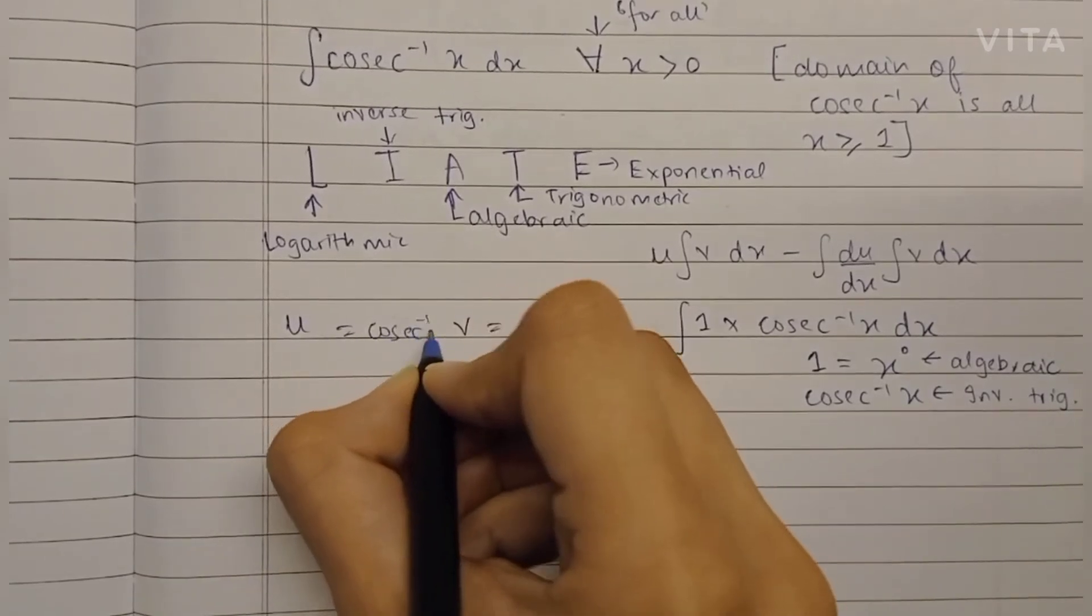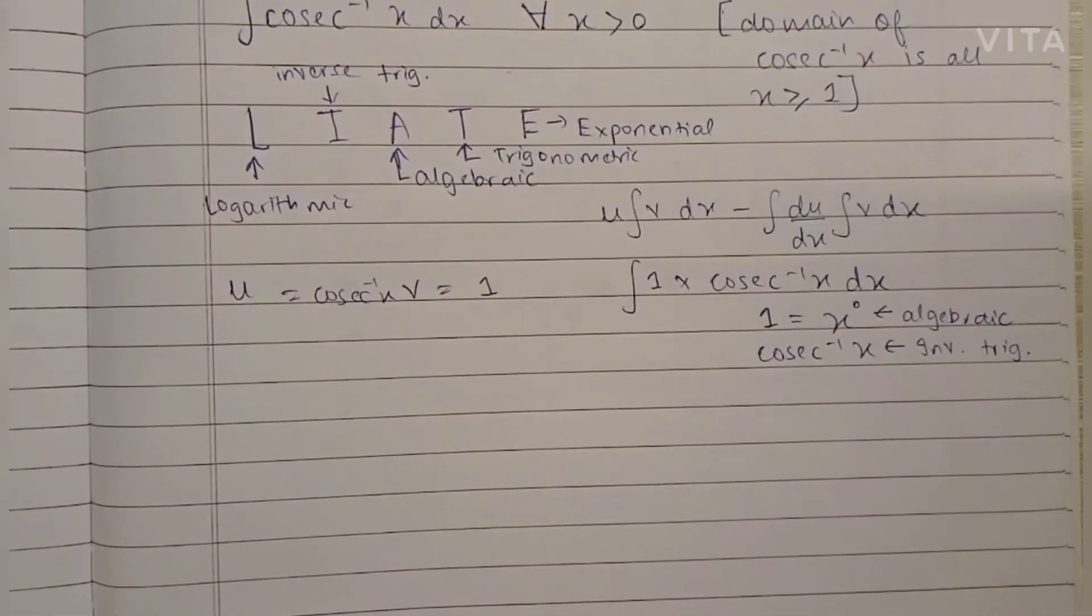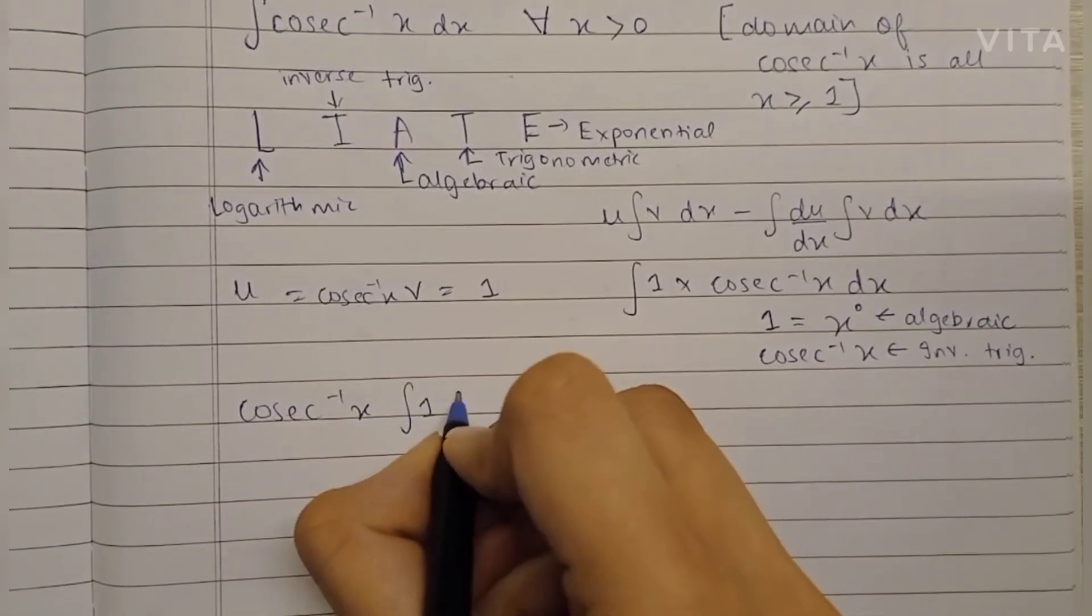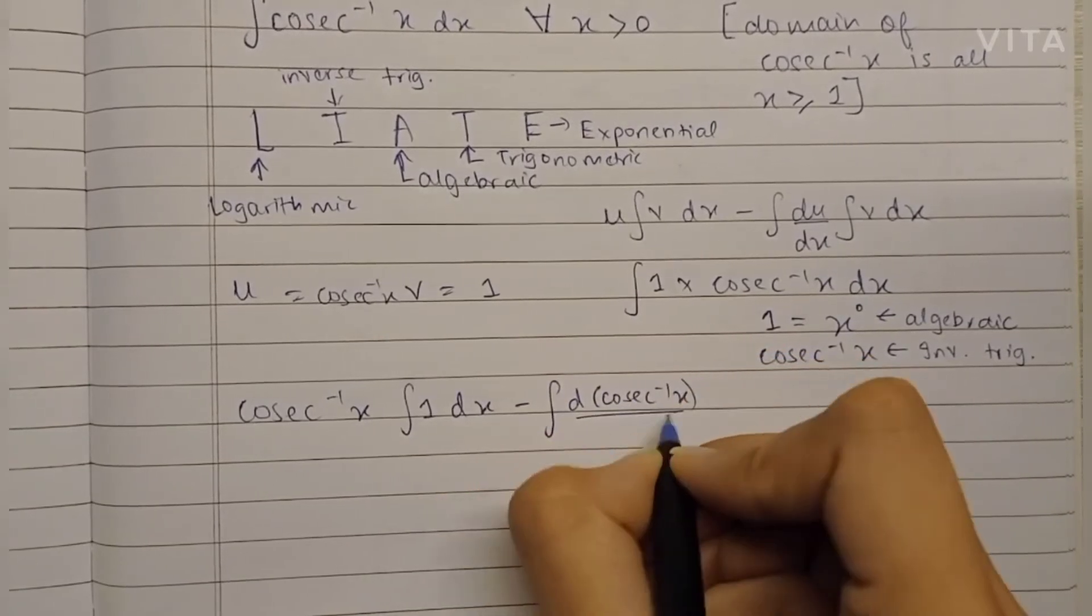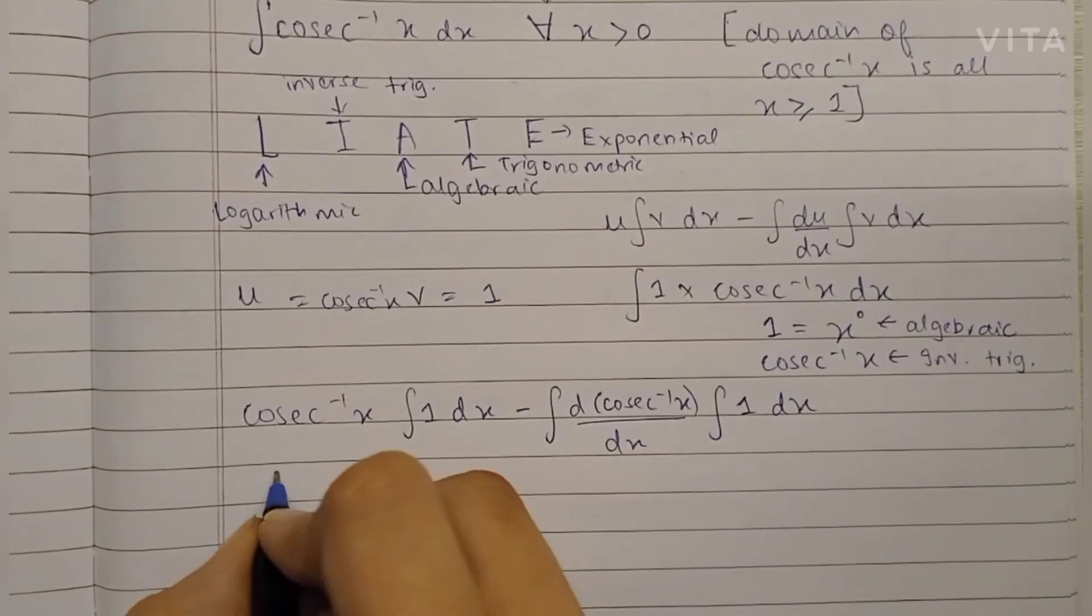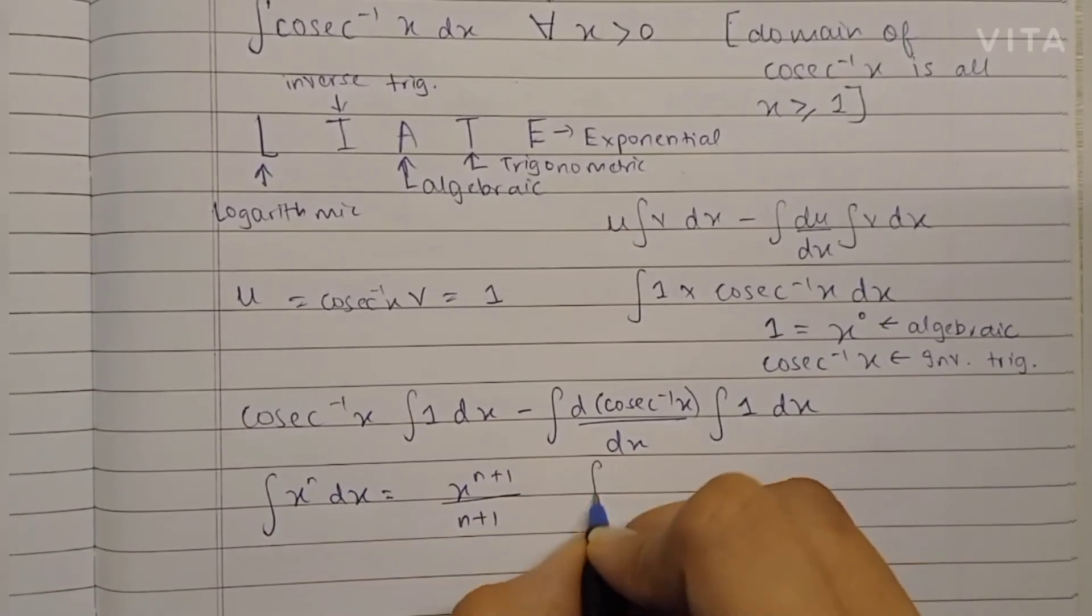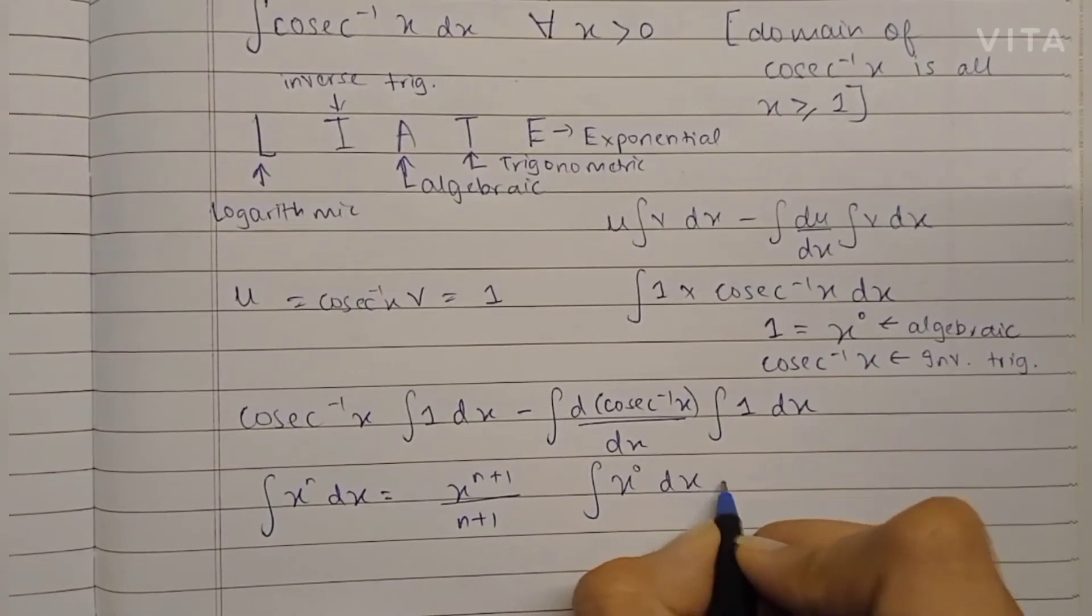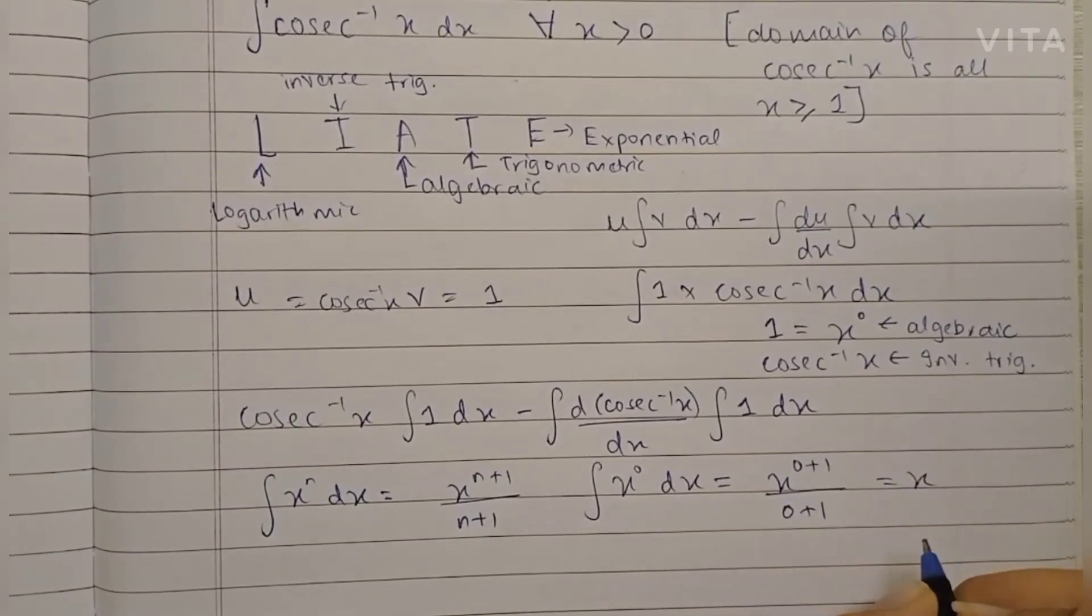So now let's use the by-parts formula. We have u, that is cosec⁻¹(x), into the integration of v minus the integration of differentiation of cosec⁻¹(x) into the integration of v. Now we know that the integration of x raised to n is x raised to n+1 upon n+1. So because we can write 1 as x raised to 0, the integration of x raised to 0 would be x raised to 0+1 upon 0+1, which is basically x. You know that when you differentiate x you get 1.